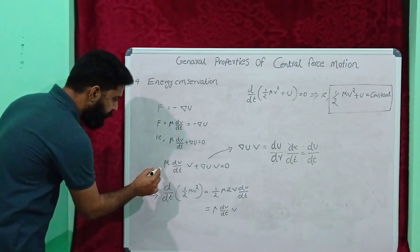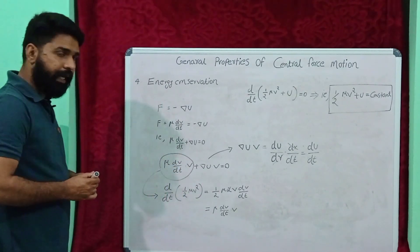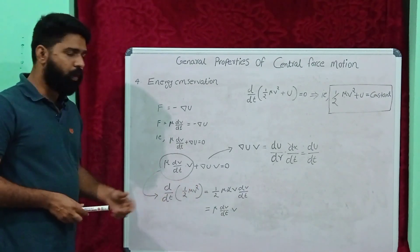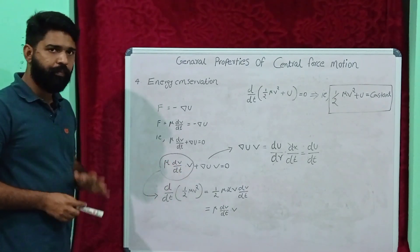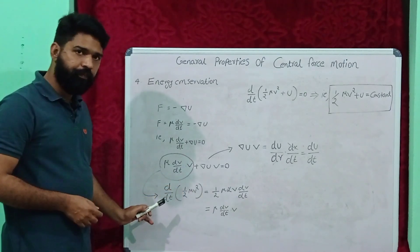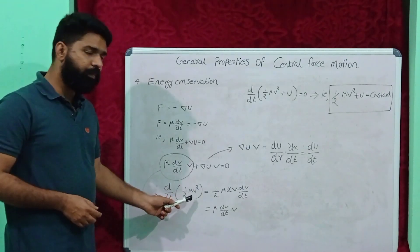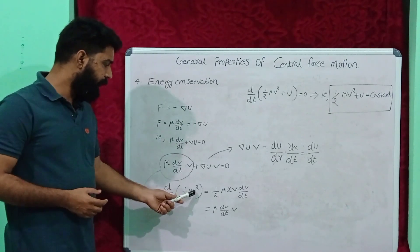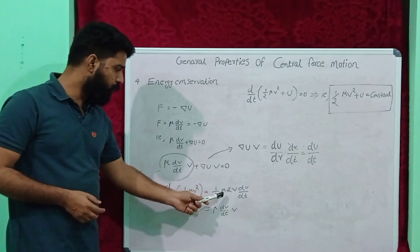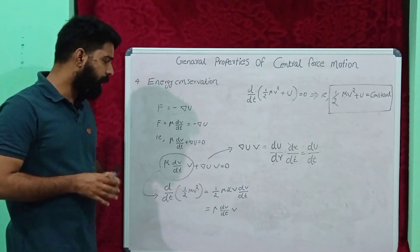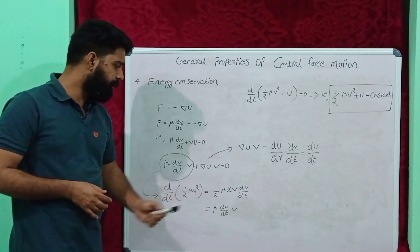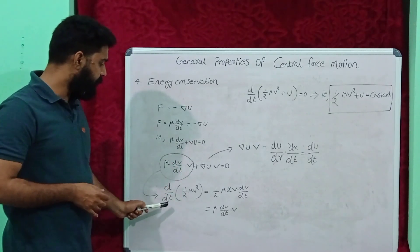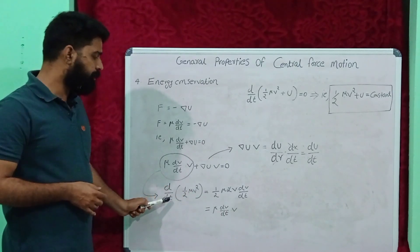This term can be rewritten in another form. The differential of one half mu v squared equals mu dv by dt dot V. Because when we solve d by dt of one half mu v squared, one half is constant, mu is constant, and we differentiate v squared to get 2V dv by dt. The twos cancel, leaving only mu dv by dt dot V. So this term can be rewritten as the differential of one half mu v squared with respect to t.